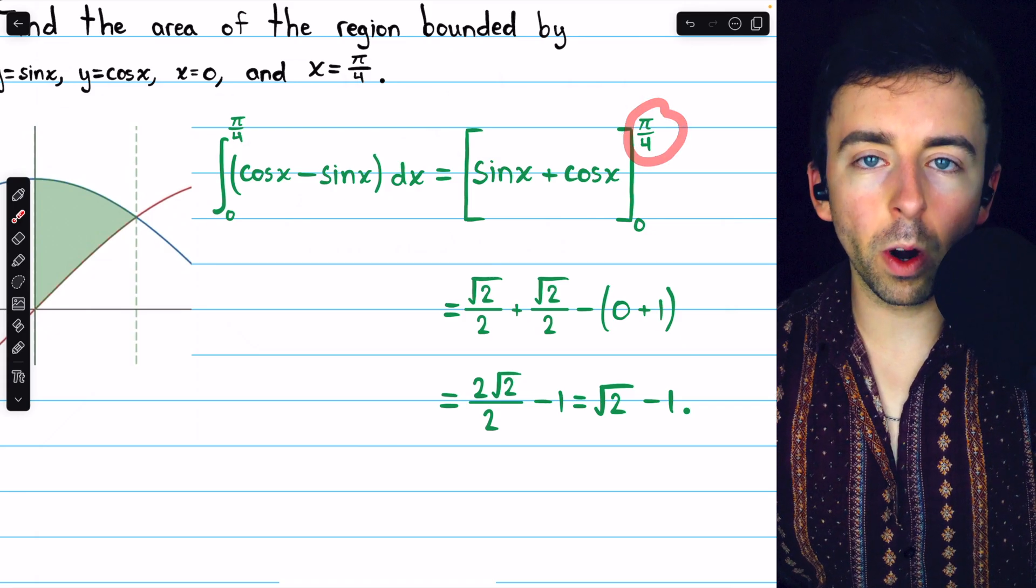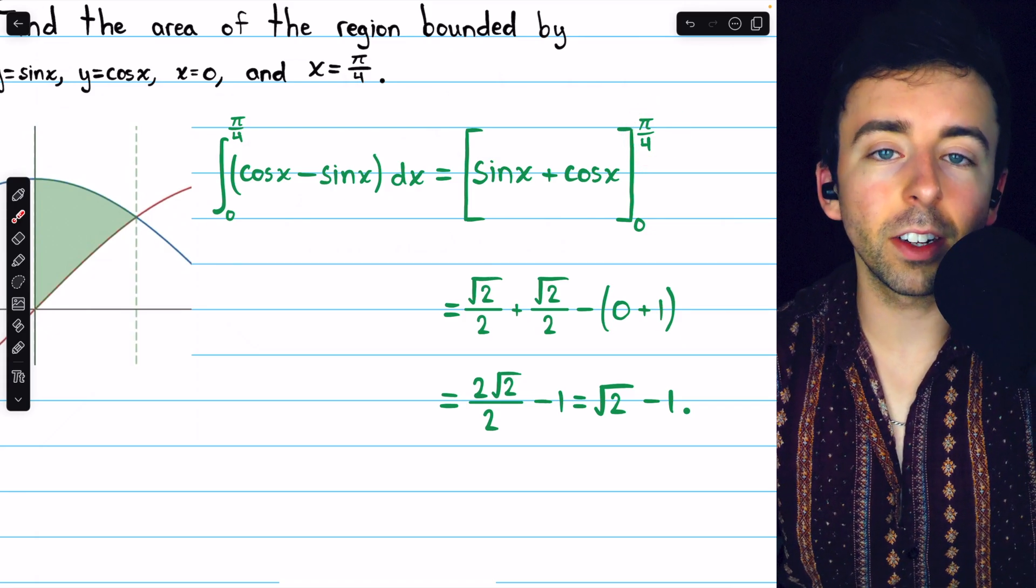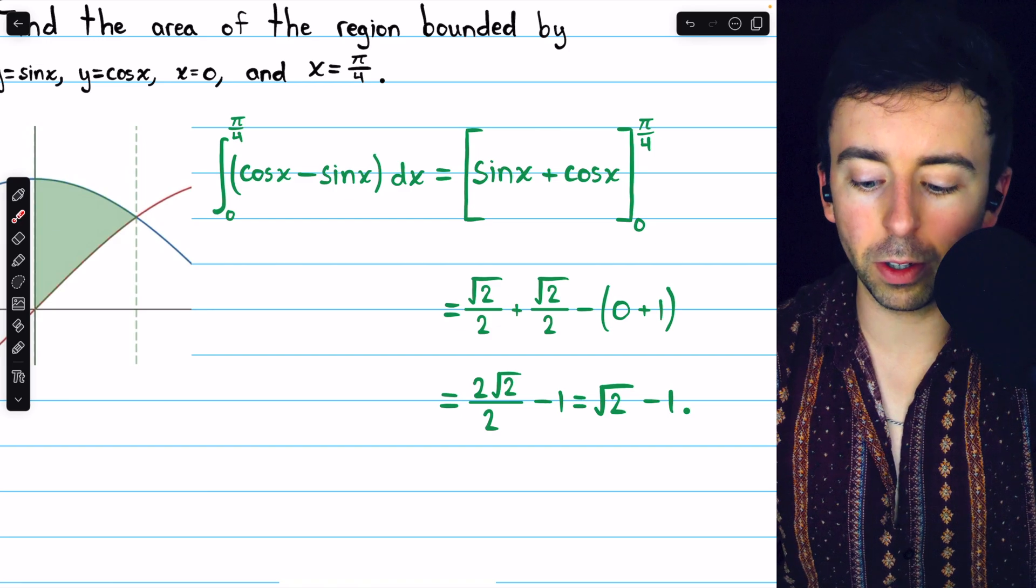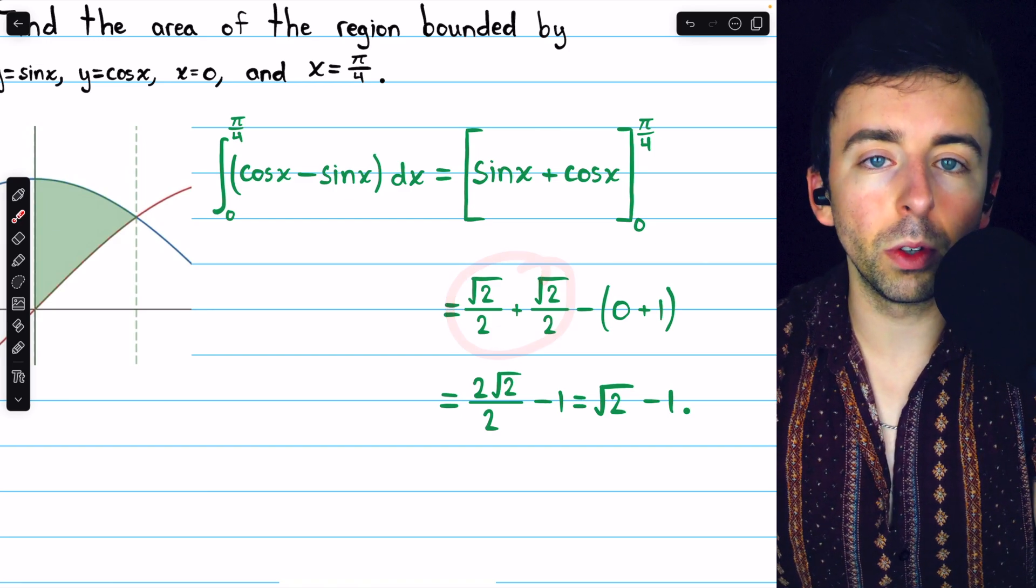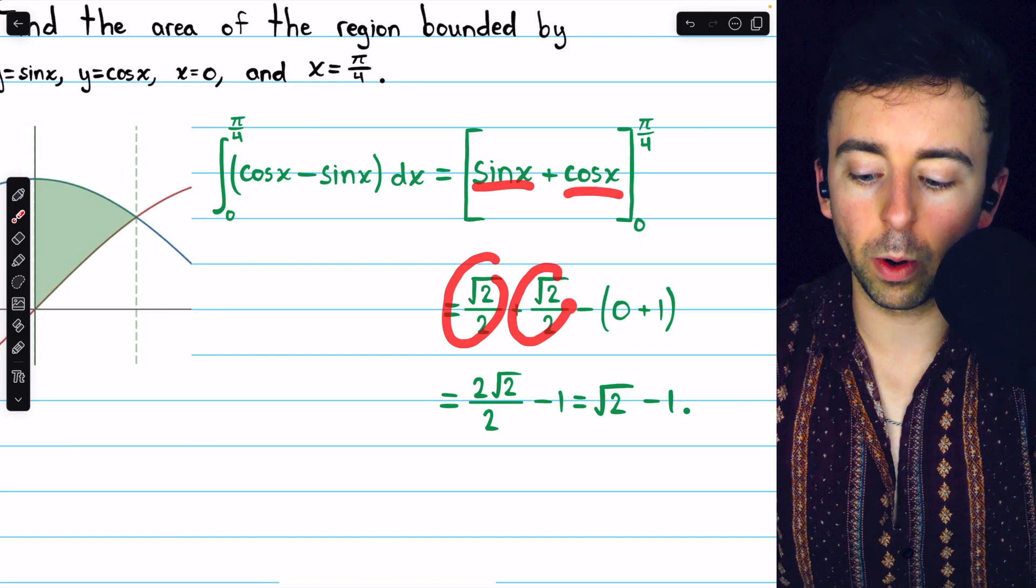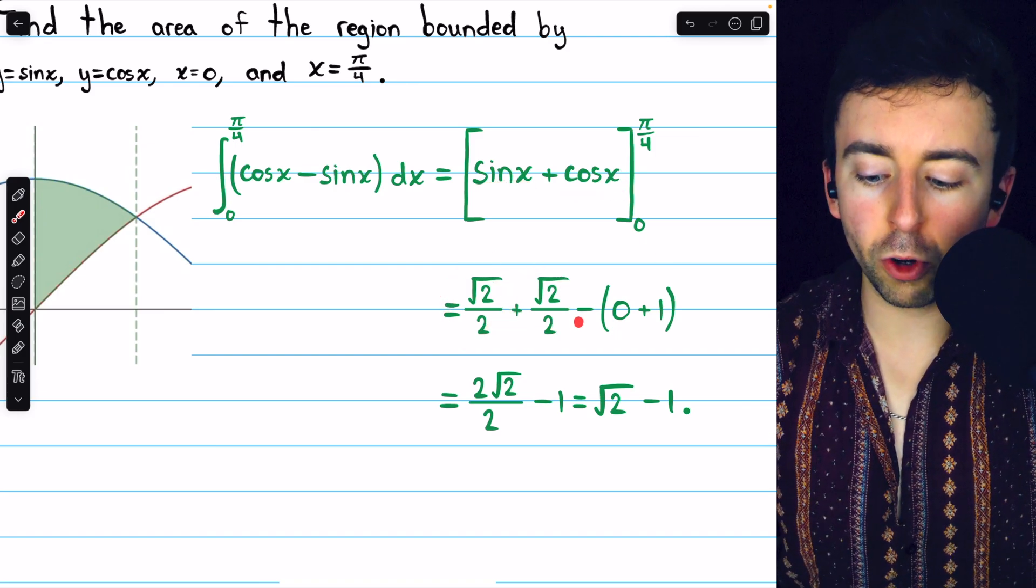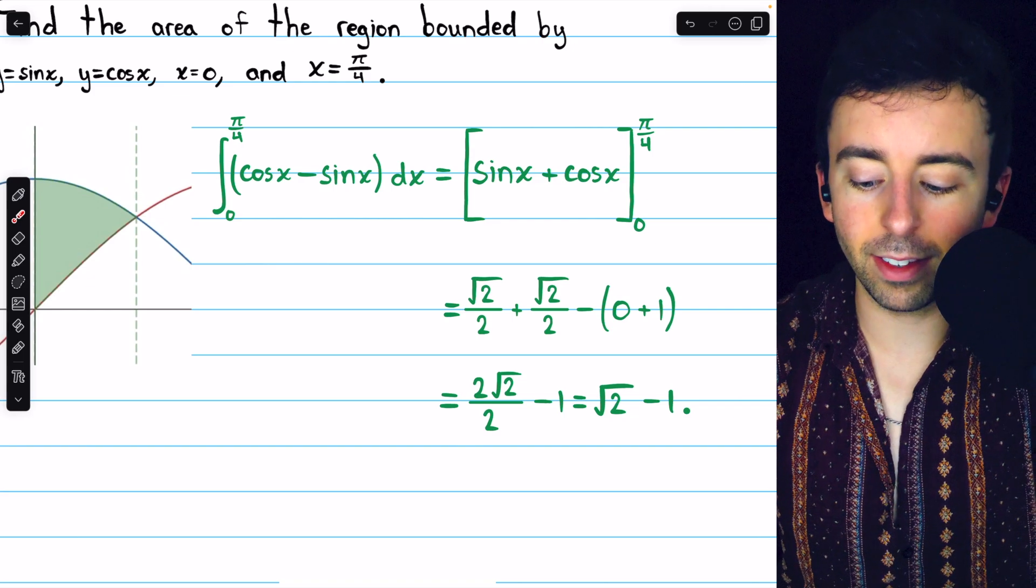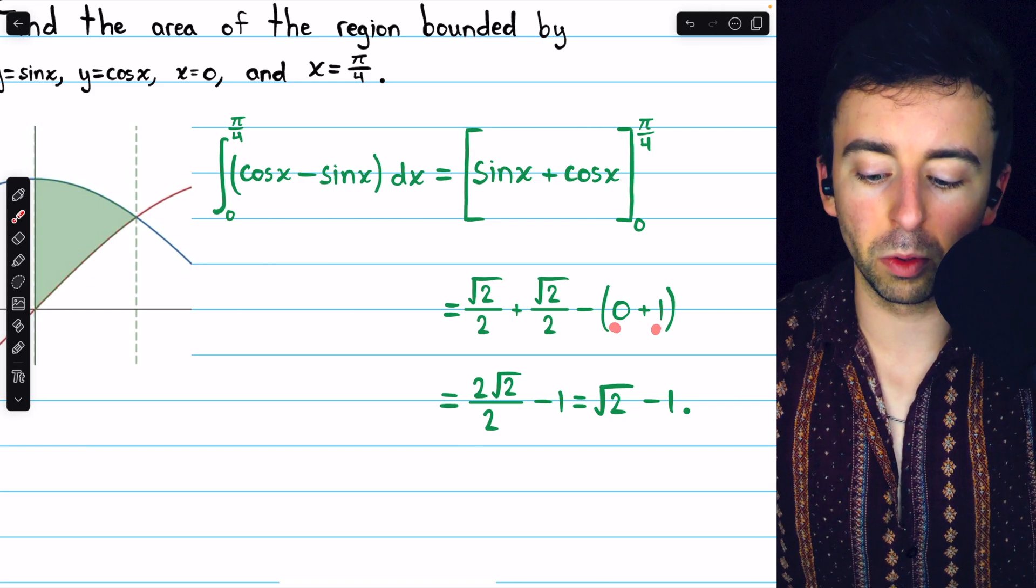When we plug in pi over four, like we said before, sine and cosine are equal there. Hopefully you know your unit circle. They're both equal to root two over two. So sine of pi over four is right there. Cosine of pi over four is right there. And then we subtract, plugging in the lower bound of zero. And again, sine of zero is zero. Cosine of zero is one.